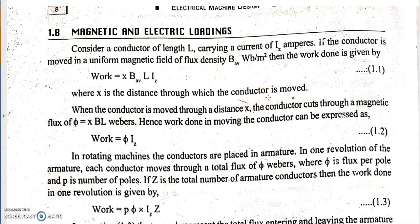We are now going to derive the output equation of a DC machine. Consider a single conductor of length L carrying a current Iz placed in a magnetic field with flux density B_average in webers per meter square. The work done will be given by B_average × L × Iz × x, where x is the distance of movement of the conductor. Since x × L gives area and B is flux density, flux per area × area gives flux φ. So φ = x × B × L, and the work done becomes φ × Iz.